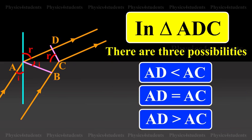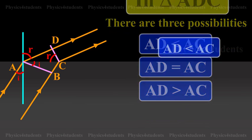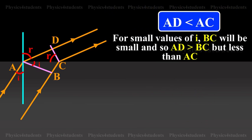In right angle triangle ADC there are three possibilities: AD is less than AC, AD is equal to AC, and AD greater than AC. For small values of i, BC will be small and so AD is greater than BC but less than AC.